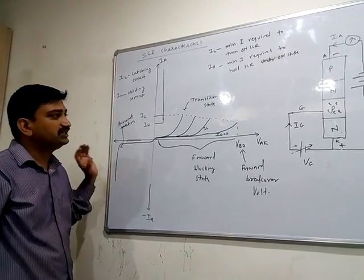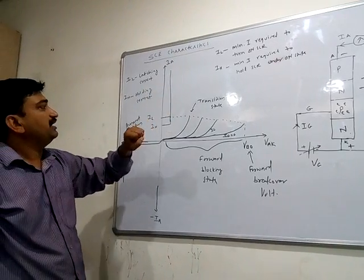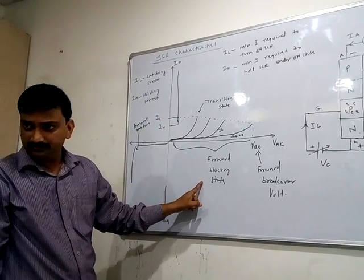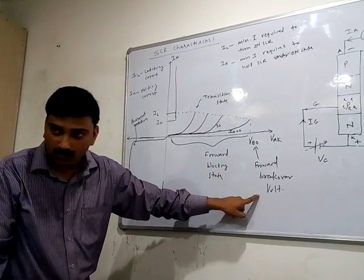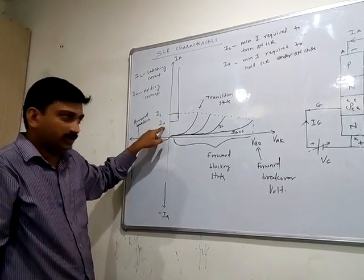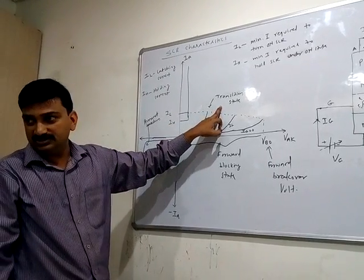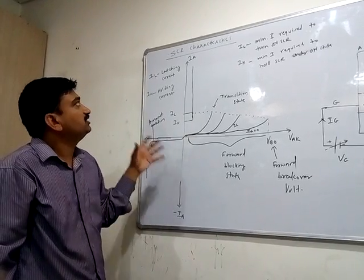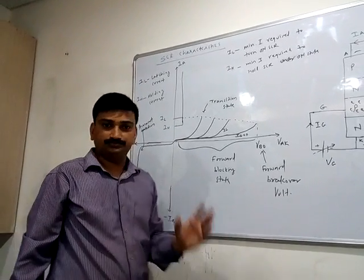The reverse bias characteristics of the SCR are the same as those of a normal P-N junction diode. In forward bias, the important parameters are: forward blocking state, forward breakover voltage VBO, latching current IL, holding current IH, and the transition state. These are the main characteristics of the SCR.